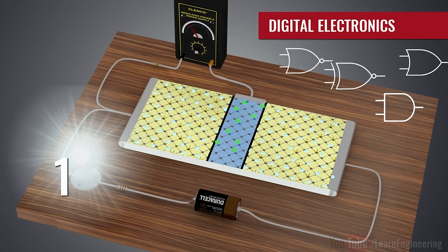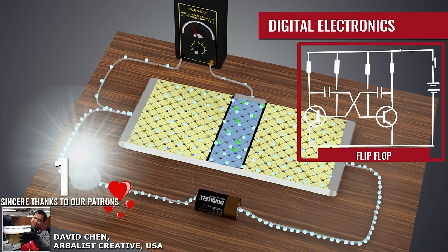Using two BJTs, you can build the basic dynamic memory element of computer, a flip-flop. To know more about it, please watch the video on the transistor as a switch.